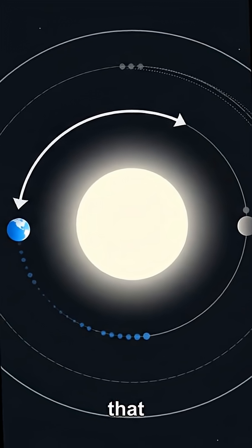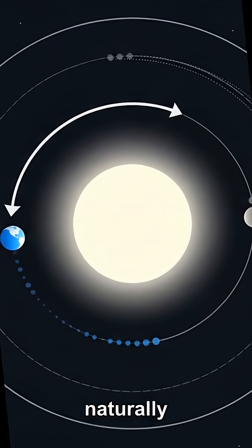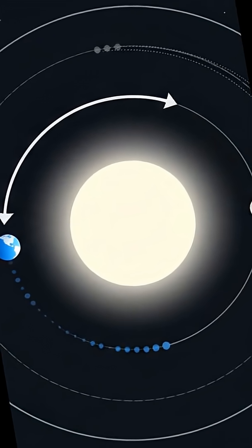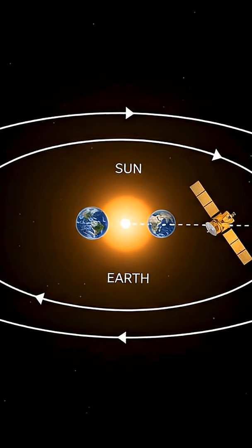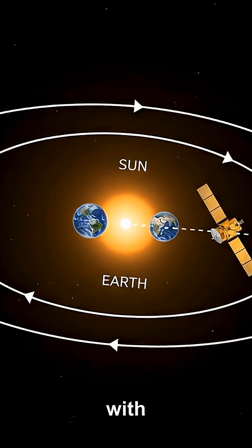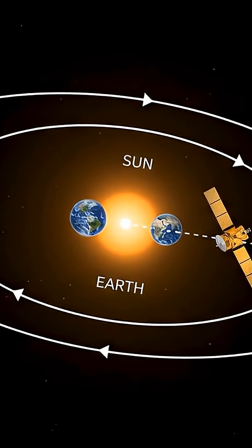At that larger radius, a free object would naturally take longer than a year to orbit and would fall behind. But Webb stays almost lined up with Earth, so it must go around the Sun once per year anyway.